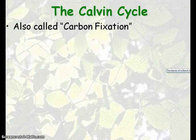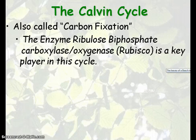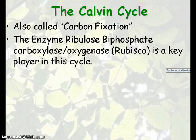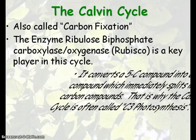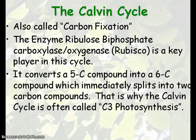Let's talk about the Calvin cycle, also called carbon fixation because carbon is being fixed or incorporated into glucose. There's a whole bunch of steps — it's a cycle — but importantly, there's an enzyme called rubisco that takes carbon dioxide and converts it into a three-carbon compound as a step in the process. So sometimes this is called C3 photosynthesis, just like the citric acid cycle gets its name from citric acid being one of the steps.